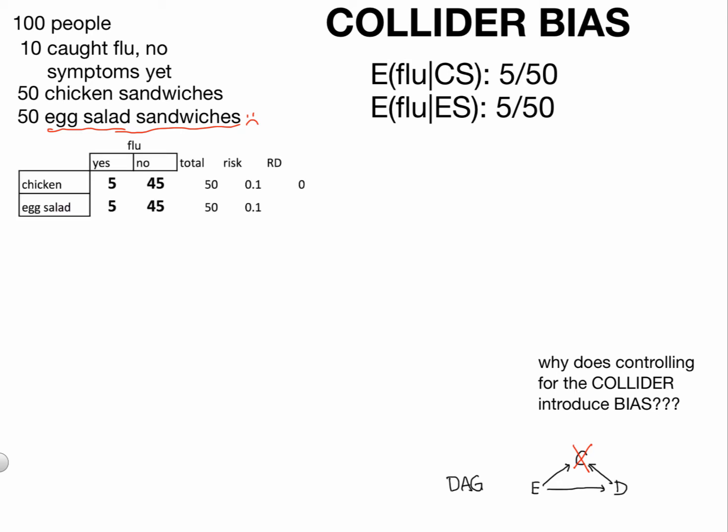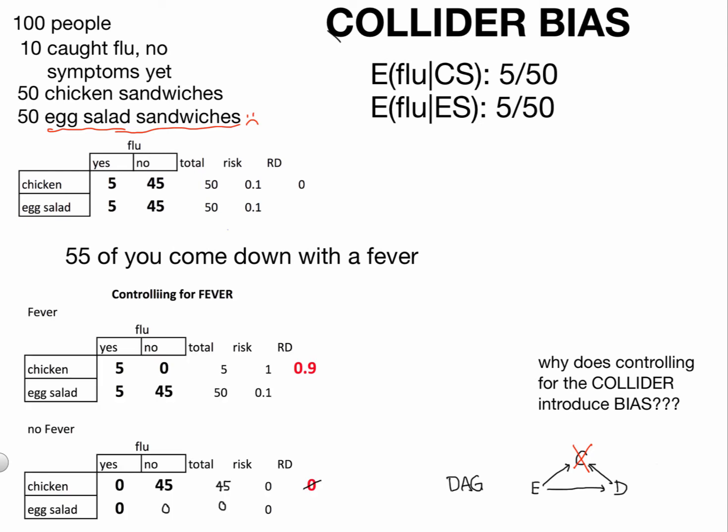If we calculate our expected values, we would expect the number of people who have the flu and ate a chicken sandwich to be exactly the same as those who have the flu and ate an egg salad sandwich — 50-50. The risk of any of them coming down with a fever is going to be exactly the same. In our example, 55 of you will come down with a fever, so now we can separate groups by whether you got a fever or didn't.